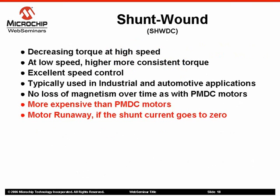The current in the field coil and in the rotor are independent of one another, thus the total current of the motor is equal to the sum of the shunt current or stator current and the rotor current. As a result, these motors have excellent speed control characteristics. Shunt wound brush DC motors are typically used in applications that require five or more horsepower such as industrial and automotive applications. Compared to permanent magnet brush DC motors, shunt wound brush DC motors have no loss of magnetism and are more robust. Some drawbacks are that they are more expensive than permanent magnet brush DC motors and have the potential of motor runaway if the shunt current decreases to zero.